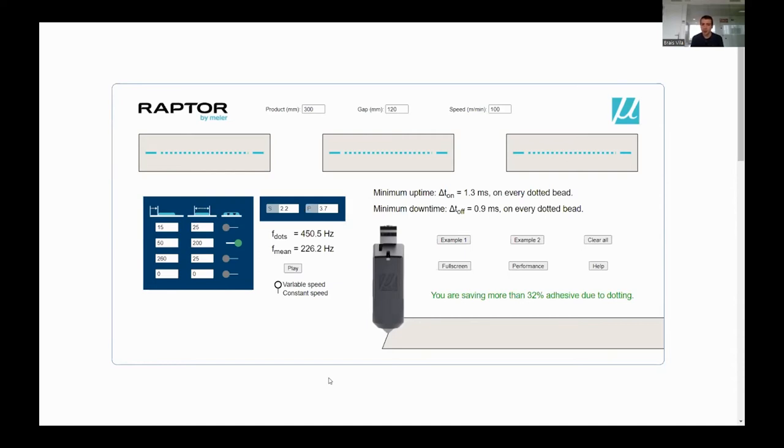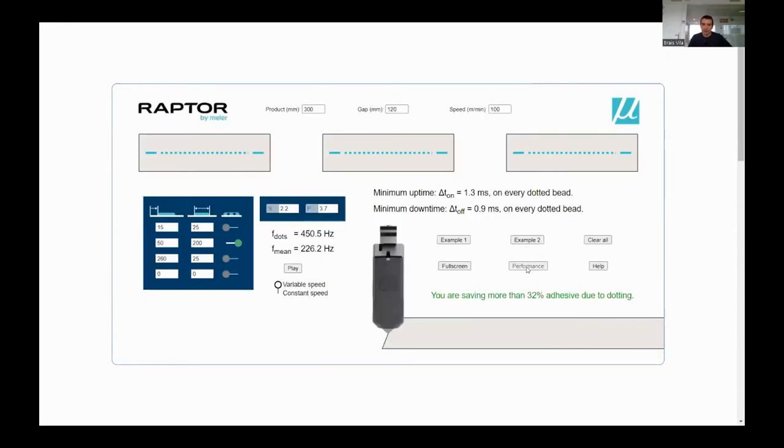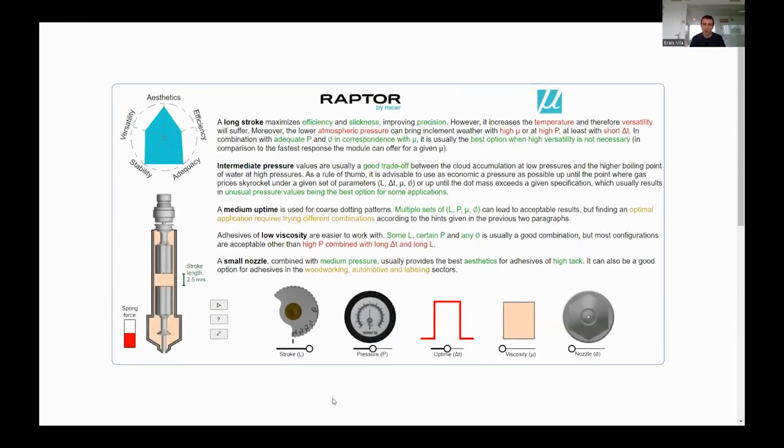The second application I made about a year ago is this other one. I call it the Parameter Exploration. This is not for sales people, this is more for technical people, more for service technicians and people like that who need to actually adjust the parameters of the application to get the best results. Because one thing is to say that I have already seen that this application is feasible, but I can actually do this application and achieve what I want. But the other question is how do I change the parameters of application to get that result that I need? That's why I programmed this second application.